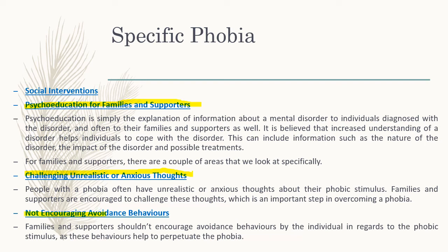Families are also taught not to encourage avoidance behaviours. For example, if a family member is afraid of dogs, every time a dog comes near them the family tends to protect them. By protecting them, they're actually encouraging avoidance behaviours because the person is not confronting the fear. In psychoeducation, the family is taught not to do that anymore — to let them face it on their own. They're not going to be able to get over the phobia if the family doesn't help them by letting them face it themselves.